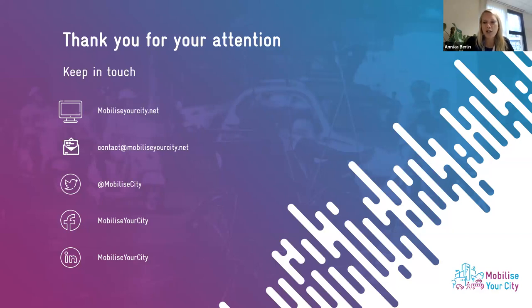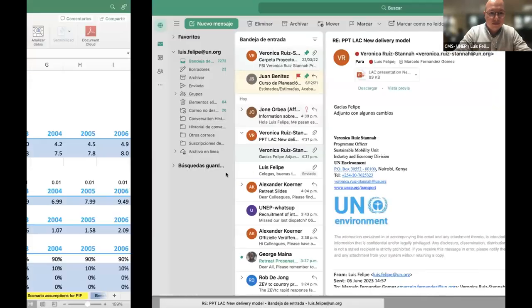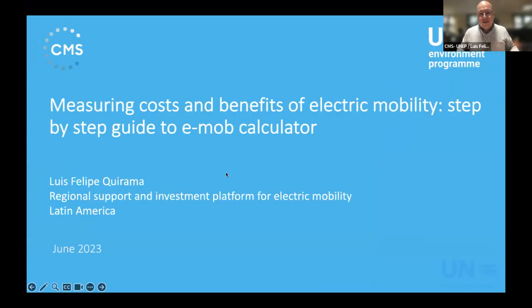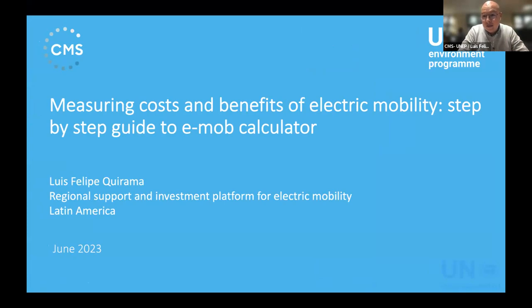Now let me hand over to Philippe. My name is Philippe Quirama. I work for the Regional Support Investment Platform for Electromobility, which is part of the Global Electromobility Program. In Latin America, it is being implemented by Centro de Movilidad Sostenible and by UNEP. Today I will present about how to use the e-mobility calculator tool to measure the costs and benefits of electromobility projects. I appreciate that Alvin and Vincent presented before me, as they covered many concepts that you can now use for implementing the UNEP electromobility calculator.